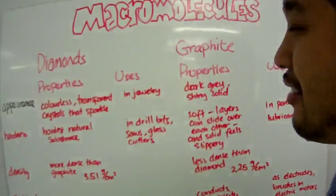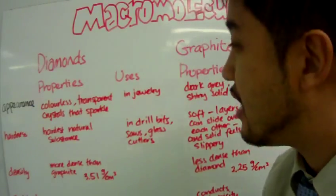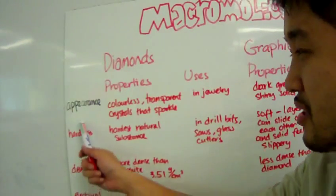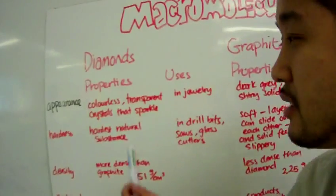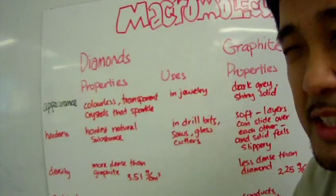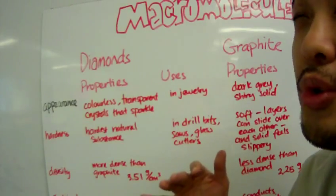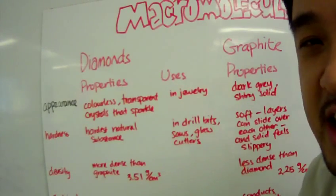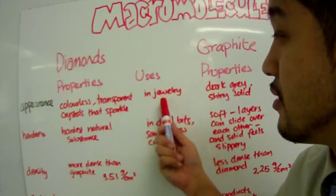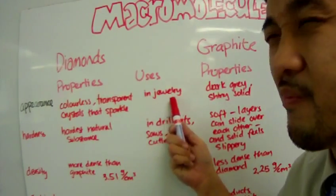Now, let's talk about the properties and uses of diamonds. Appearance: Diamonds are colorless transparent crystals that sparkle. That's why the ladies love it. Girl's best friend, they say. Jewelry.